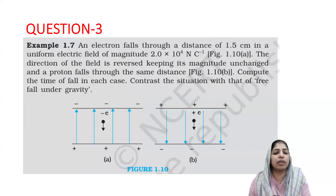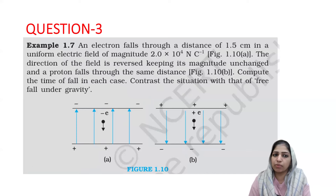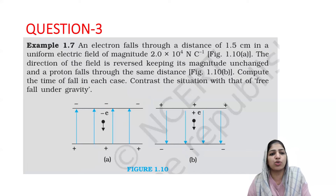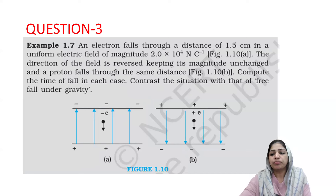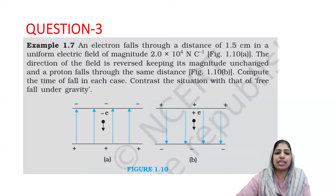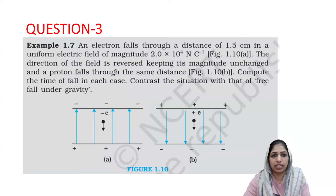Question number 3 is a peculiar question. It is Example 1.7, a very important question that has appeared in the last 6-7 years. It is solved in the textbook, so make sure you read it carefully — it falls in the long answer category and is a 5-mark question.